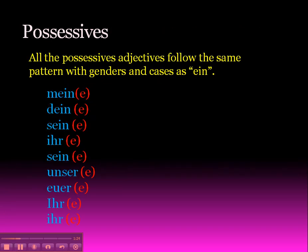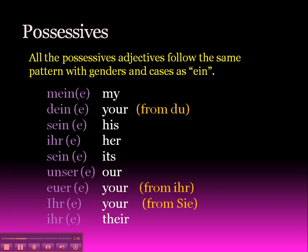Under that you can see my and your. These are what we call possessives or possessive adjectives, and these all follow the same pattern as ein when it comes to genders and cases. So there they are listed for you: mein, dein, sein, ihr, and so on, with brackets indicating the different endings for plural and also for feminine. And there are your meanings, so it's worth getting those into your head as well.